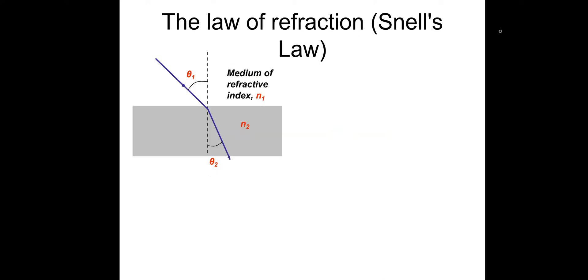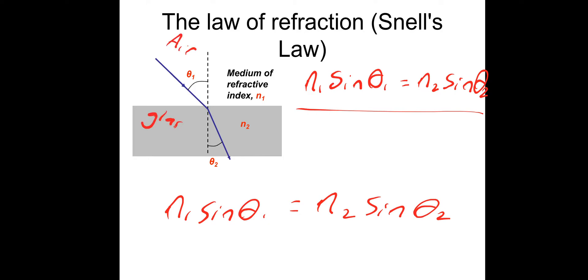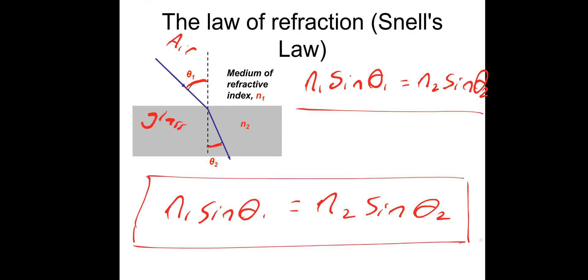The law of refraction — Snell's law — is simply: N1 sinθ1 = N2 sinθ2. N1 is the refractive index of substance 1 — in this instance that would be air. Sinθ1 is the sine of angle 1. N2 is the refractive index of the material that the light goes into — in this instance it would be glass. And sinθ2 is simply the sine of angle θ2. Snell's law is very useful.